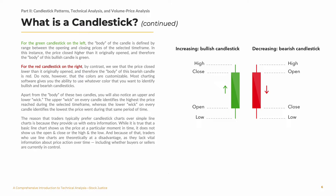Apart from the body of these two candles, you will also notice an upper and lower wick. The upper wick on every candle identifies the highest the price reached during the selected timeframe, whereas the lower wick on every candle identifies the lowest the price went during the same period of time. The reason that traders typically prefer candlestick charts over simple line charts is because they provide us with a wealth of extra information. While a basic line chart shows us the price at a particular moment in time, it does not show us the open and the close or the high and the low, and because of that, traders who use line charts are theoretically at a disadvantage as they lack vital information about price action over time, including whether buyers or sellers are currently in control.